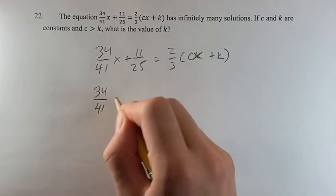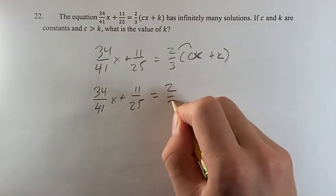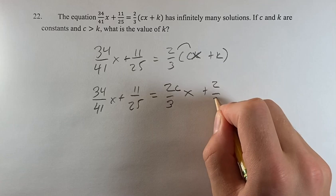So if we keep this side the same and we distribute that two-thirds, we get two-thirds cx plus two-thirds k.